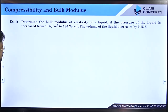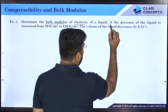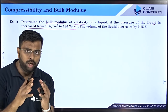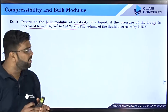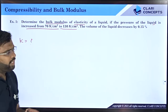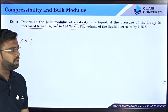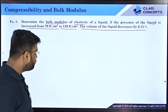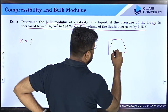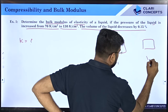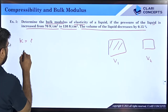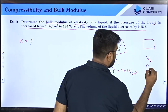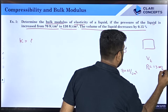Let us take some numericals. First numerical: determine the bulk modulus of elasticity of a liquid if the pressure of the liquid is increased from 70 Newton per centimeter square to 130 Newton per centimeter square, and the volume of the liquid is decreased by 0.15 percent. We are to find K. Delta P is the pressure change from 70 to 130 Newton per centimeter square, and let us call the initial volume V1 and the compressed volume V2.